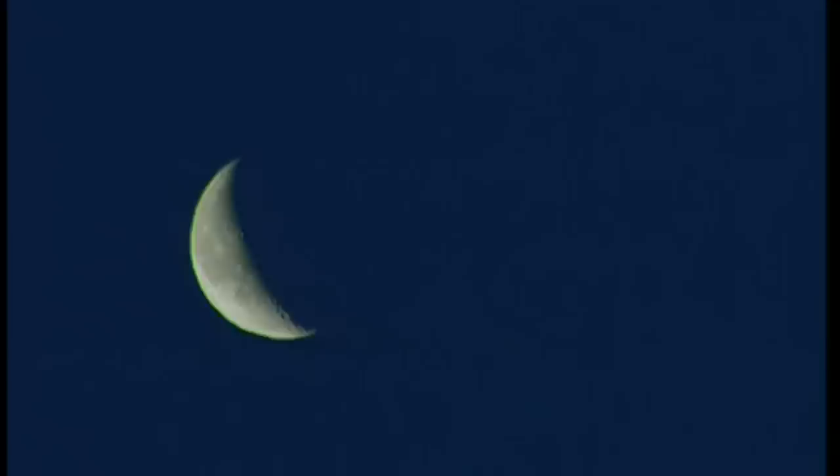Par contre, la Lune, elle, est restée stérile et sans vie. Aucun océan, rien n'a pu cacher ses cicatrices. On les voit très bien à l'aide d'un télescope. 30,000 cratères environ criblent sa surface. Chaque dépression est le témoin d'un impact.